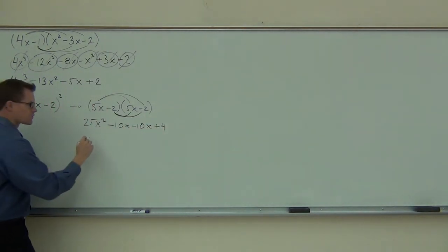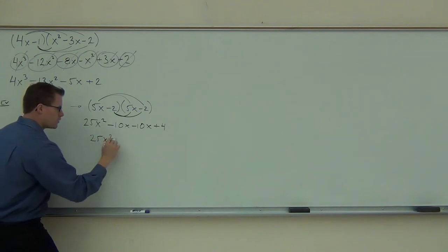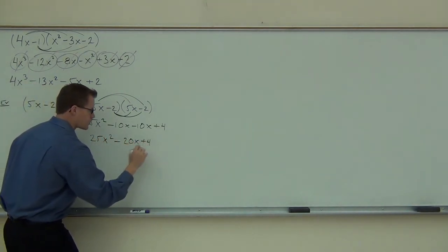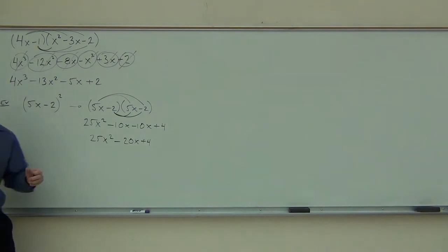And so we're going to get the 25x² minus 20x plus 4. That's as good as we can do. We can't combine that anymore.